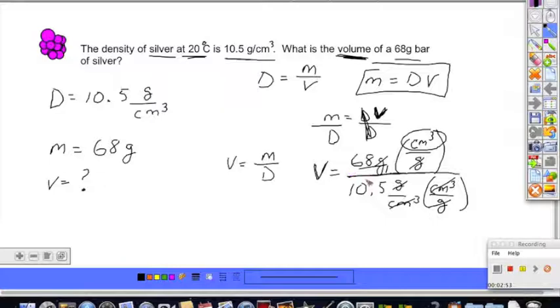So we're good. And if you calculate this through on your calculator, you'll receive an answer, let's say 68 divided by 10.5, gives us a value of 6.476190 cubic centimeters.